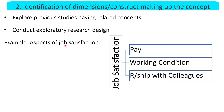For example, job satisfaction may have three dimensions: pay, working condition, and relationship with colleagues. These three dimensions adequately represent job satisfaction. Note that I am just using this as an example — job satisfaction may have more dimensions. I am considering three dimensions here for illustration purposes.